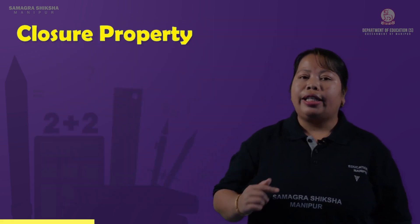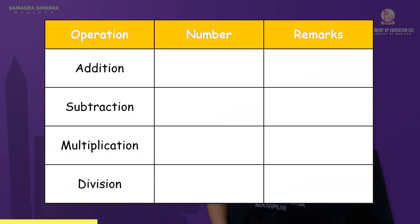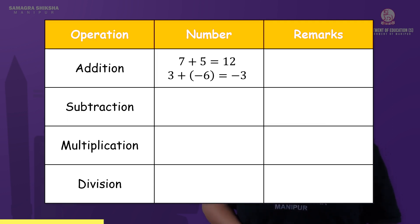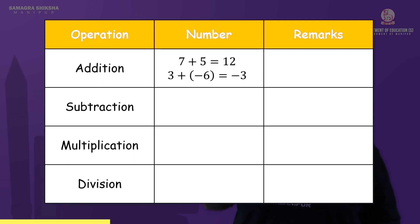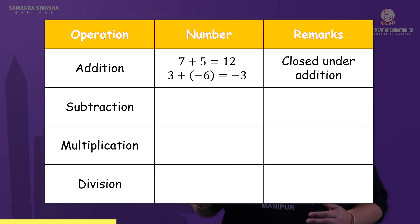Next we have to write the integer table — operations, numbers, and remarks. We write addition, subtraction, multiplication, and division. Example: 7 plus 5 is equal to 12. Next, 3 plus minus 6 is equal to minus 3. Minus 3 is an integer. 7 and 5 are positive integers and 12 is also a positive integer. Is minus 6 an integer? Yes, it is a negative integer. So it is closed under addition.